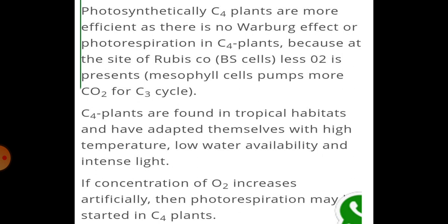Photosynthetically, C4 plants are more efficient as there is no Warburg effect or photorespiration. The Warburg effect is related to C3 plants. What happens is that Rubisco enzyme has affinity for both oxygen and carbon dioxide. If the concentration of oxygen is more in the cell, then Rubisco converts ribulose bisphosphate into phosphoglycolate, which is a C2 compound, instead of phosphoglyceric acid. This starts another cycle which we call photorespiration, stopping the Calvin cycle.